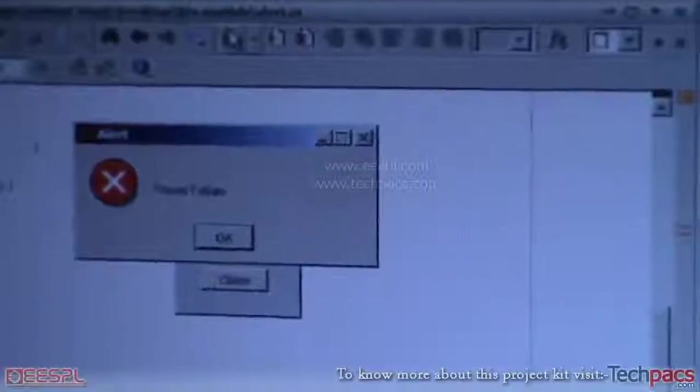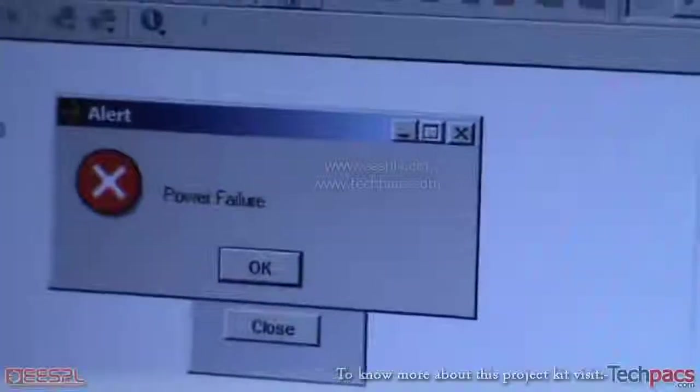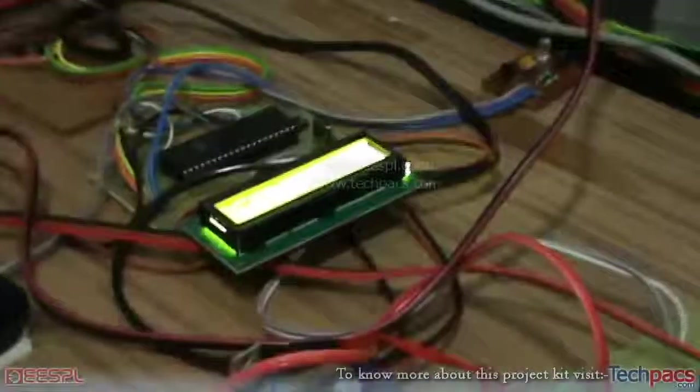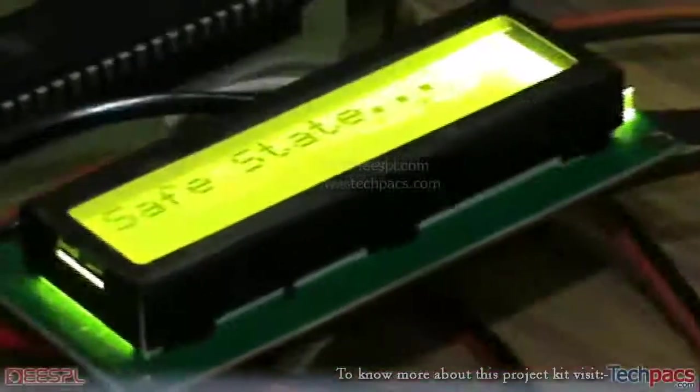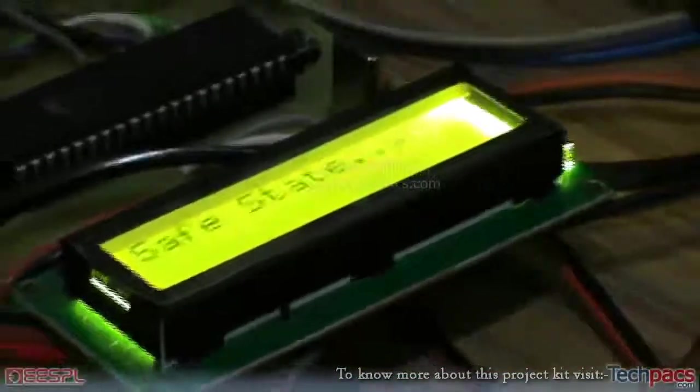And our error box again on the MATLAB itself displaying the power failure. Similarly we have a fire sensor. In case the fire sensor will be activated, we'll see. There, the fire has been activated and on the LCD also it displays the fire. There it goes and the buzzer also beeping.